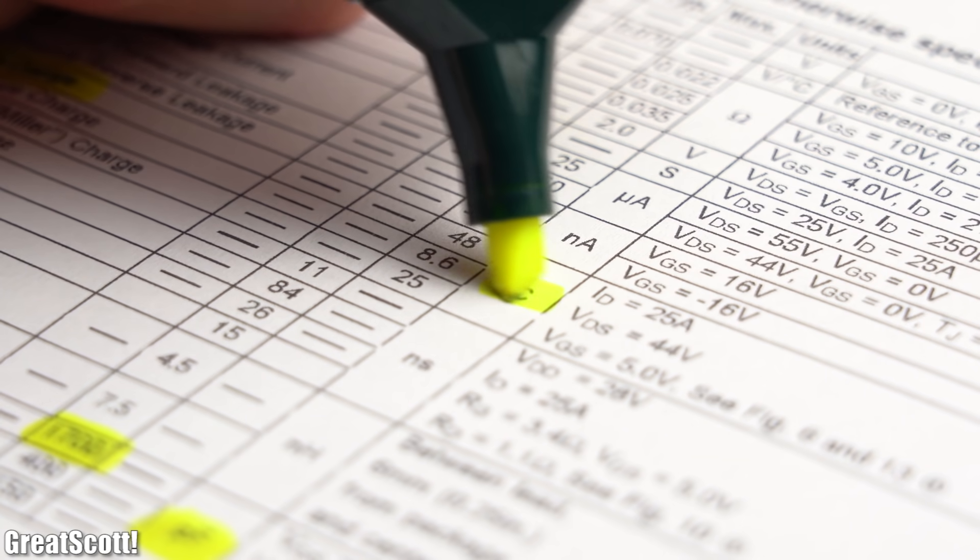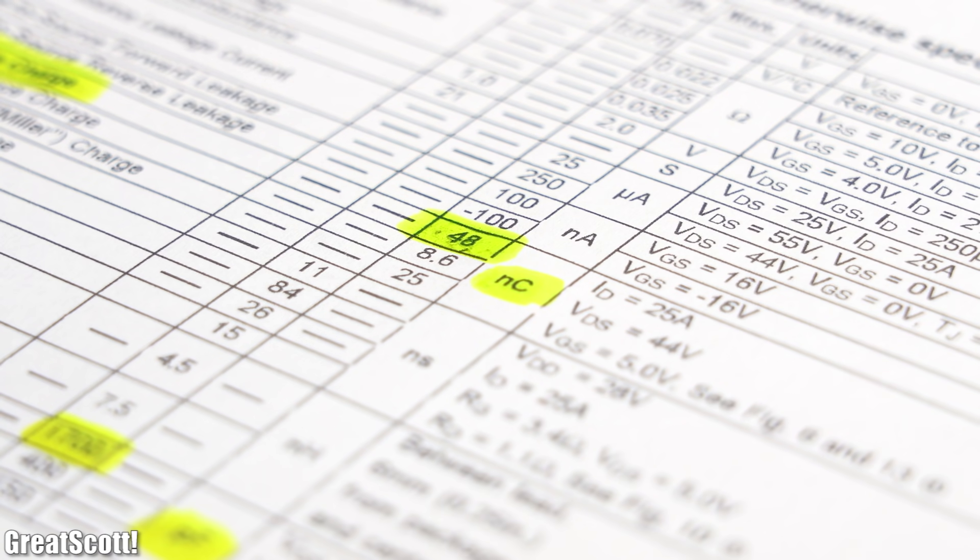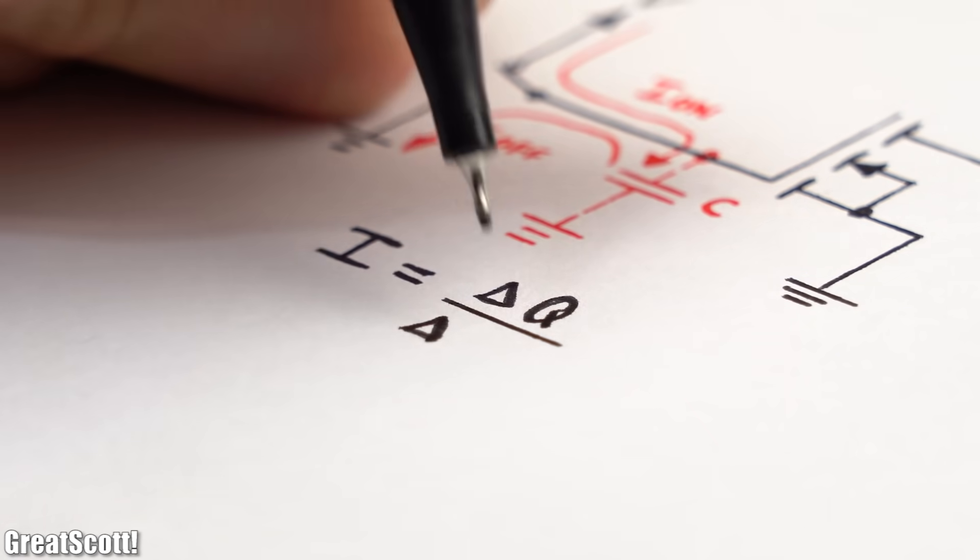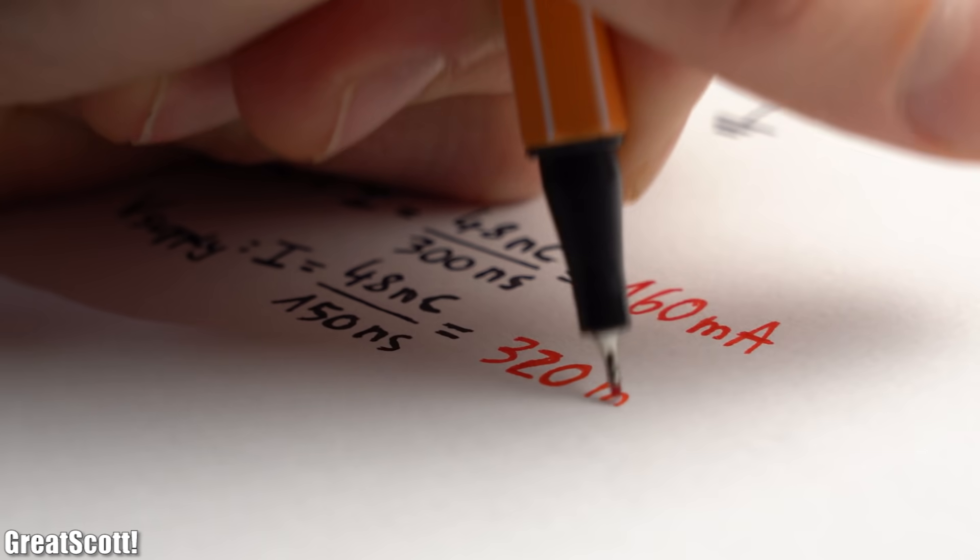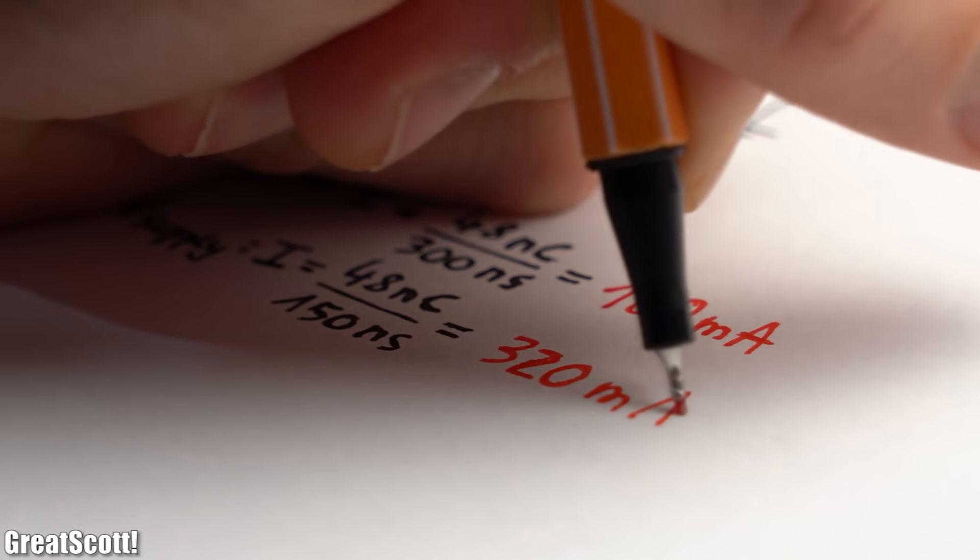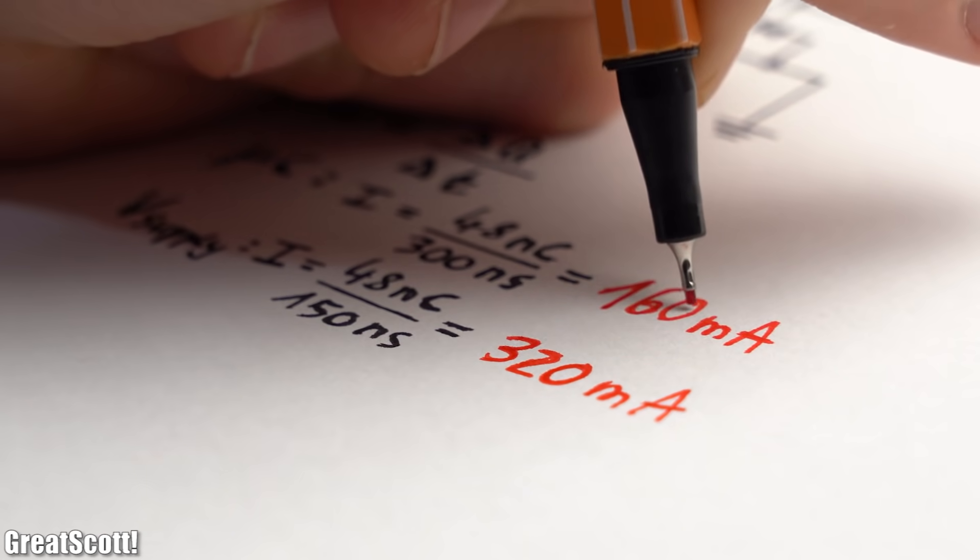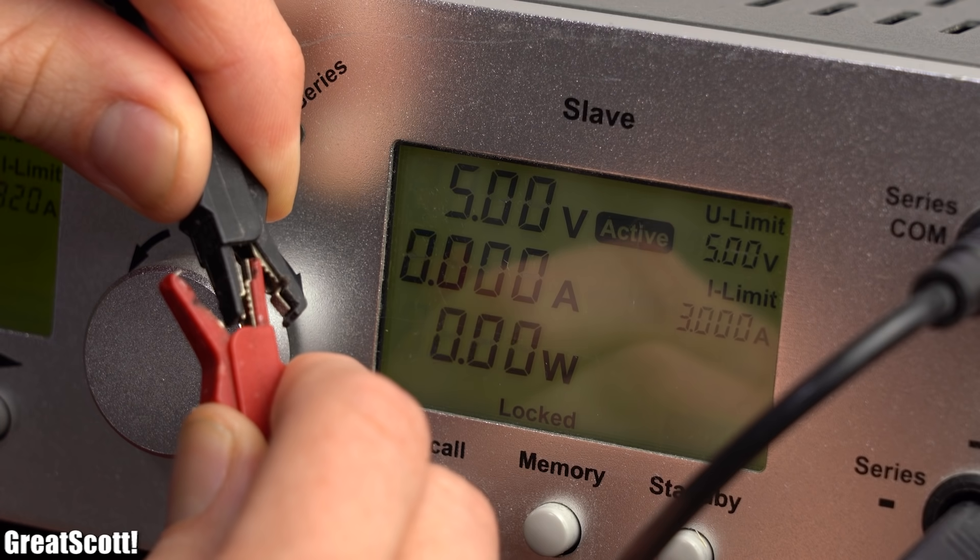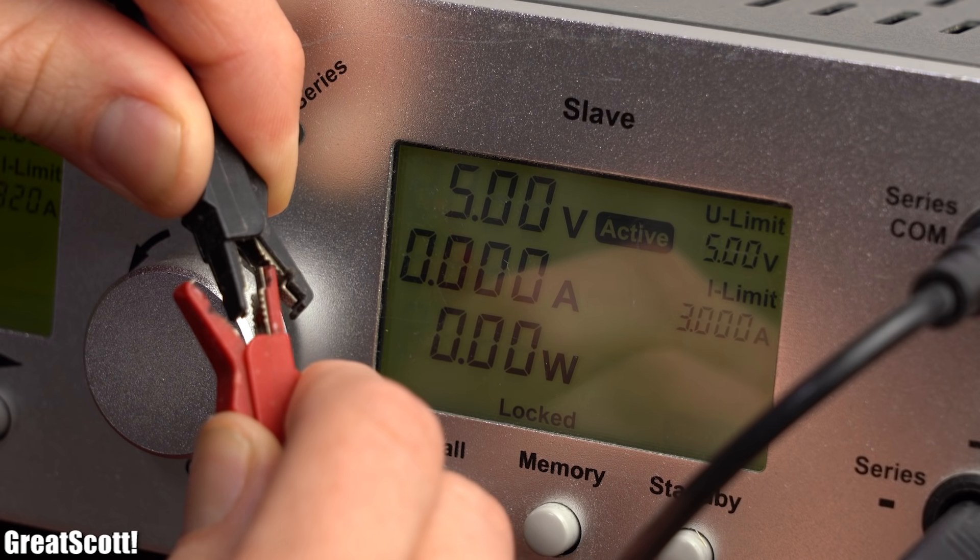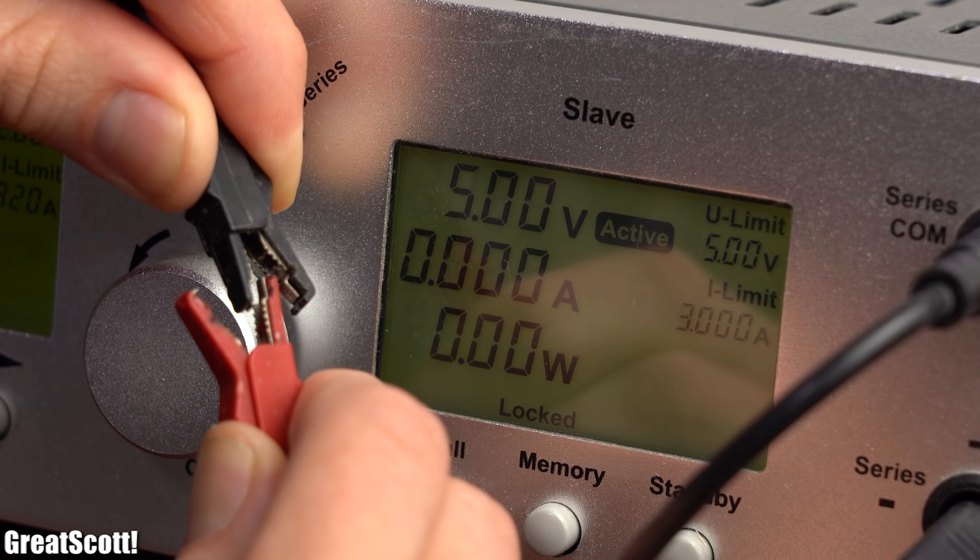So for our datasheet example we have to feed 48nC into and out of the gate in order to switch the MOSFET. Since we know that the average current equals the derivation of the charge over the time, we can simply insert the values for the microcontroller and supply voltage example and therefore get a current of 160mA and 320mA. Here we can clearly see that the lab bench power supply can switch the MOSFET faster because it can provide more current in a shorter amount of time.